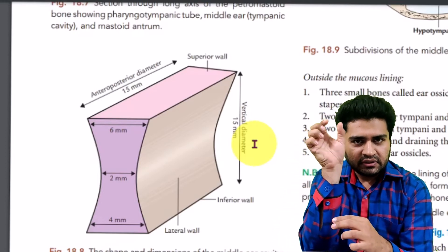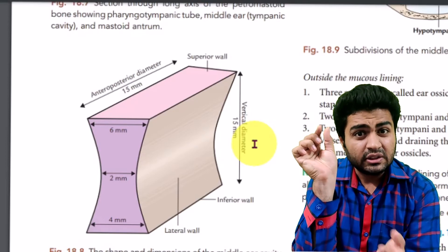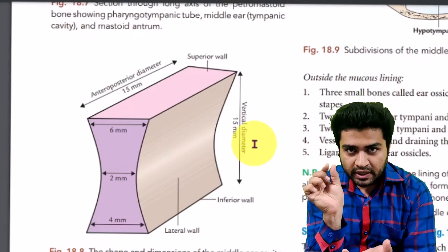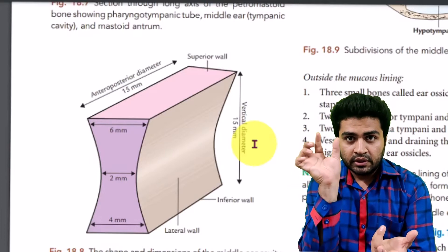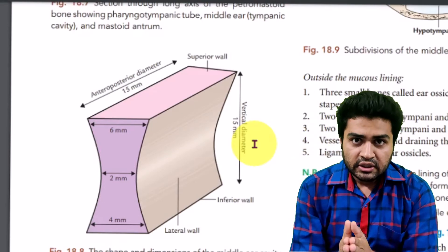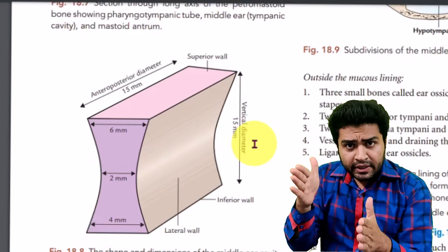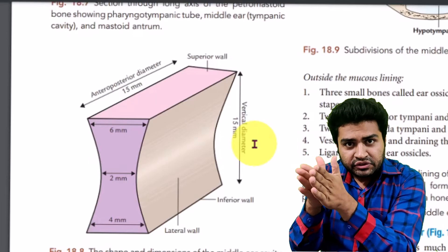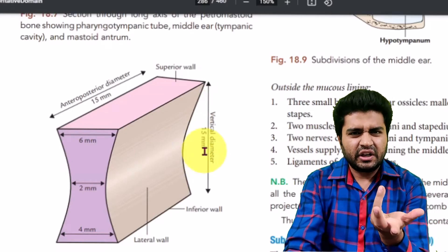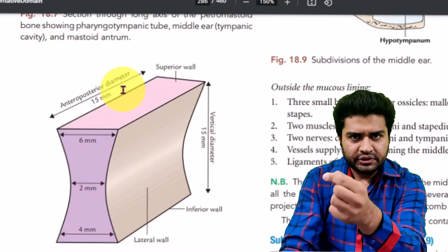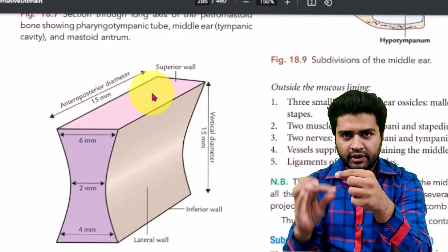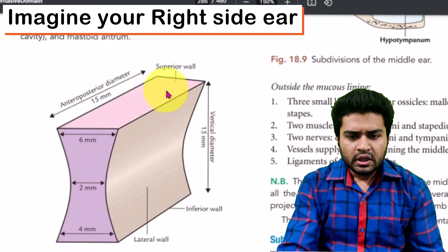From the upper part — the epitympanum — it is 6 mm. At the middle part it is 2 mm, and at the lower part it is 4 mm. Just remember: 4 + 2 = 6. This means the tympanic membrane and the medial wall are very close to each other at the mesotympanum. The vertical diameter is 15 mm (approximately 1.5 cm) and the anteroposterior diameter is also approximately 1.5 cm.